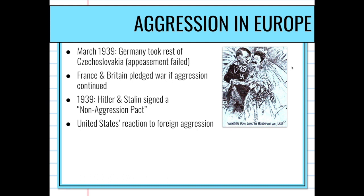As for the United States, we wanted to stay out of everything. By the mid-1930s we were dealing with the Great Depression and many domestic problems, so we adopted isolationism — we were not going to get involved. In 1935 we passed the Neutrality Act, which said we would not sell arms, weapons, or supplies to nations at war.